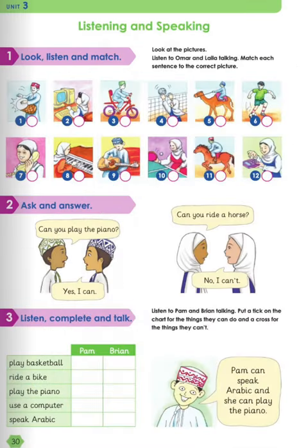Moving on to listening and speaking. Look, listen, and match. Look at the pictures and listen to Omar and Leila talking. Match each sentence to the correct picture. Listen carefully. I can play football. I can use a calculator. I can ride a bike. I can play the drums. I can use a phone. I can play volleyball. I can ride a horse. I can play the piano. I can ride a camel. I can play table tennis. I can use a computer.